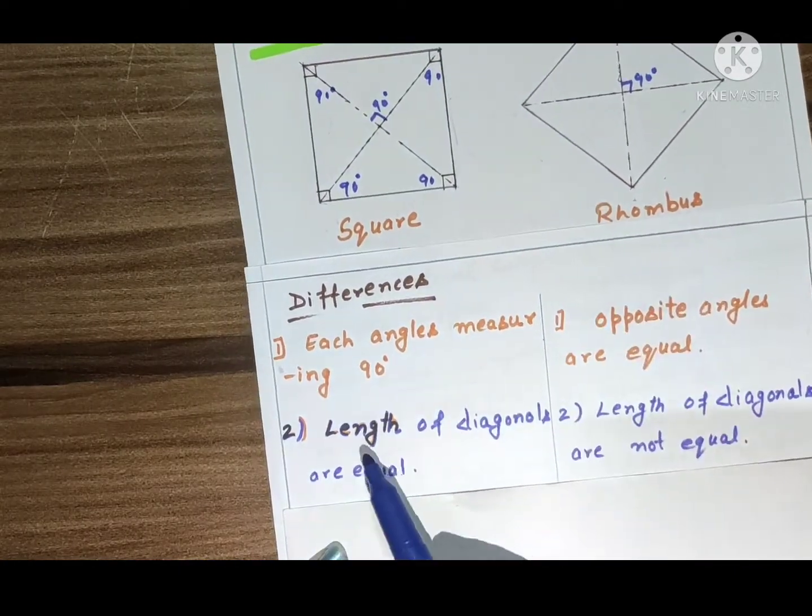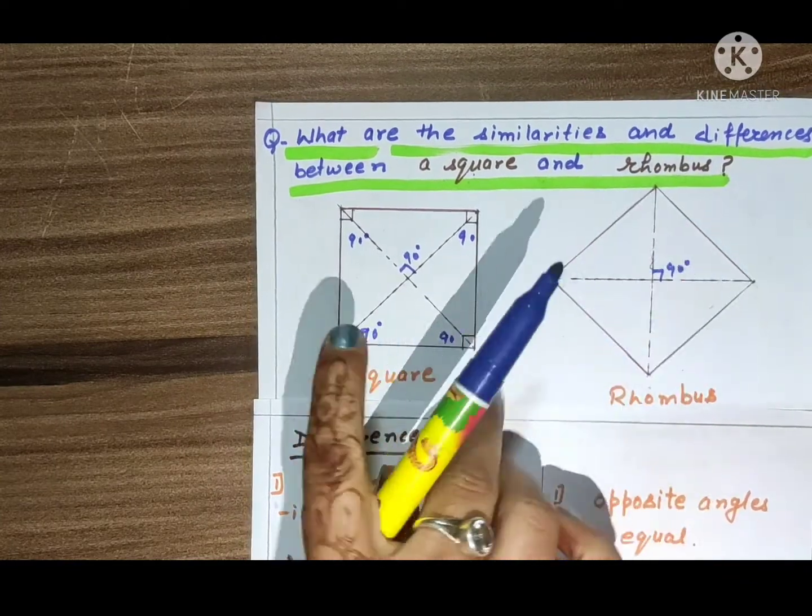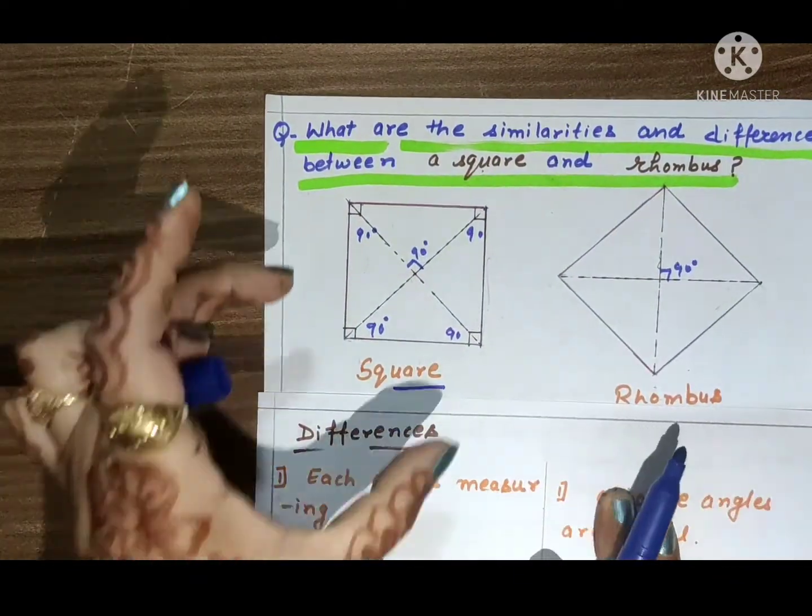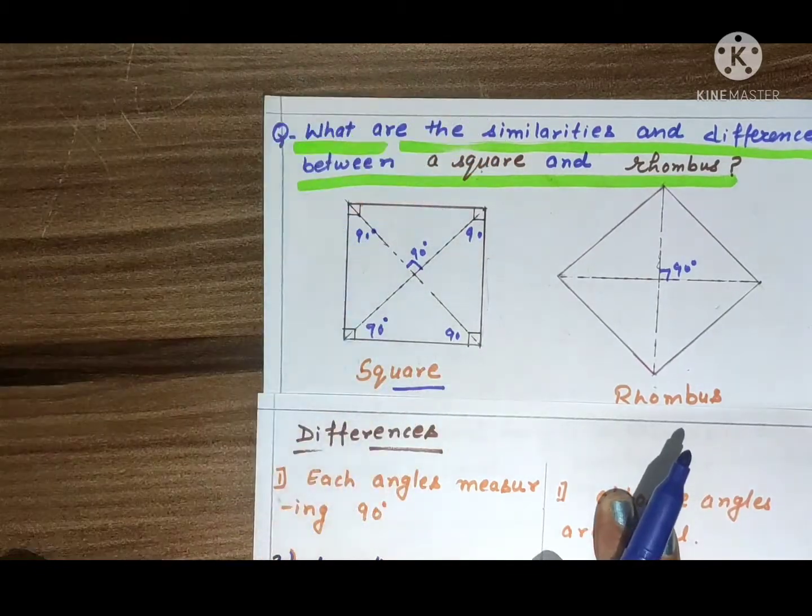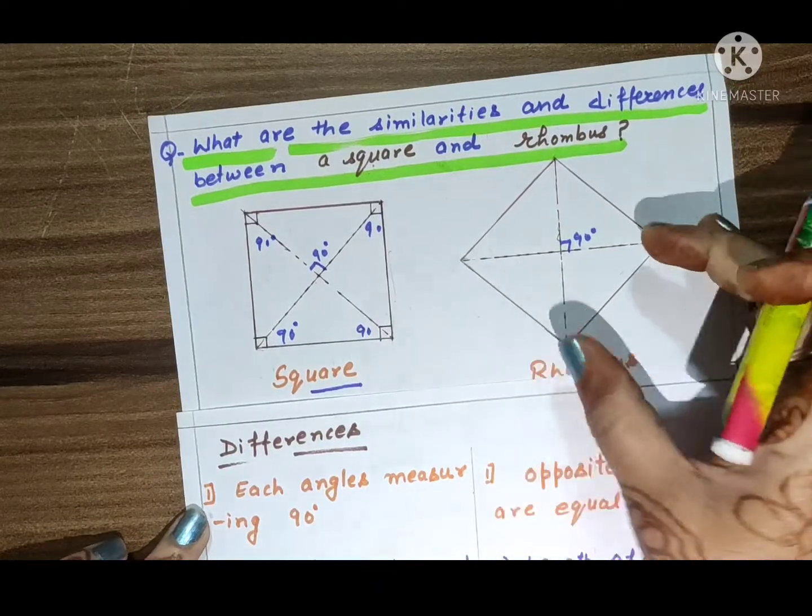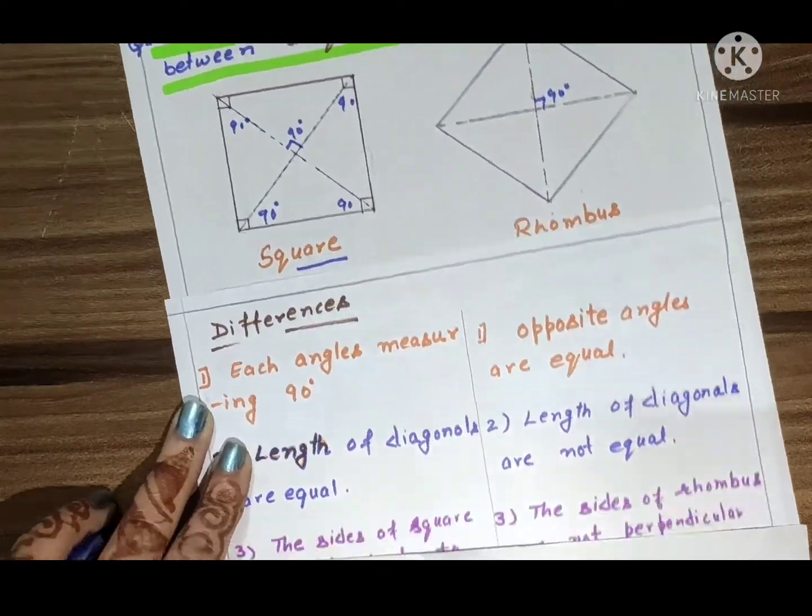Second point: length of diagonals are equal. In case of square, both diagonals have the same length, but in rhombus, the diagonal lengths are not equal.